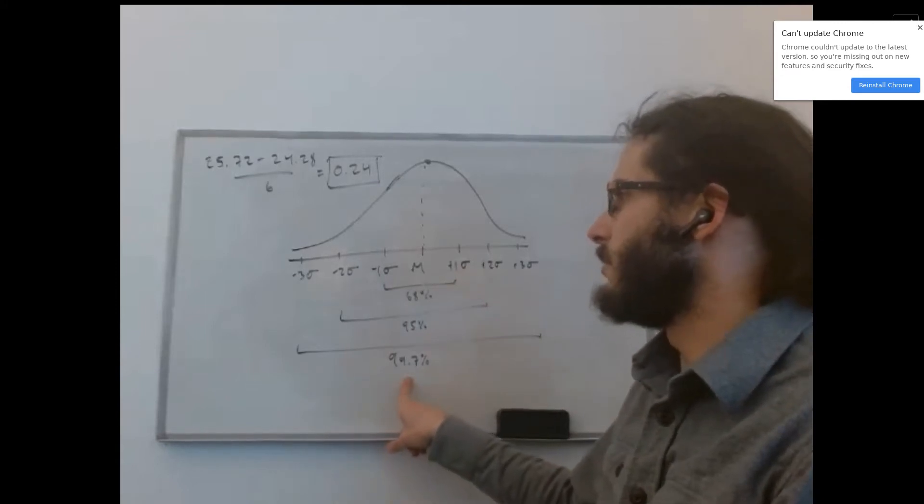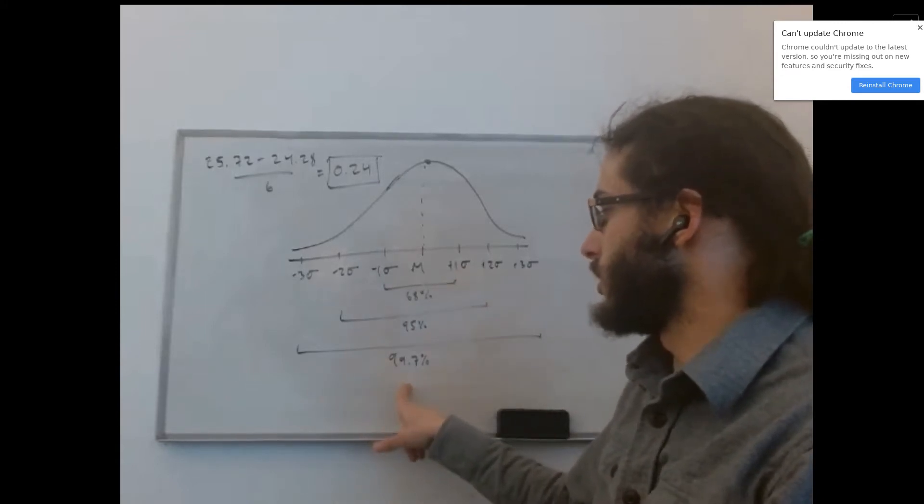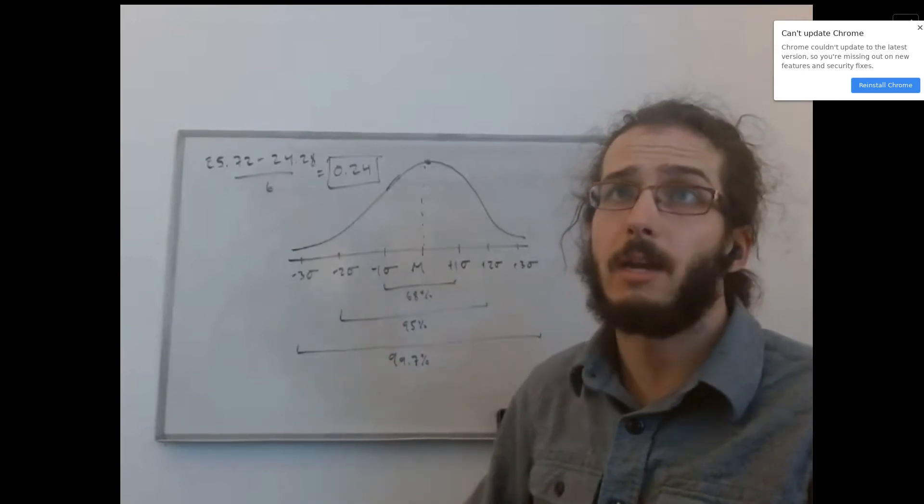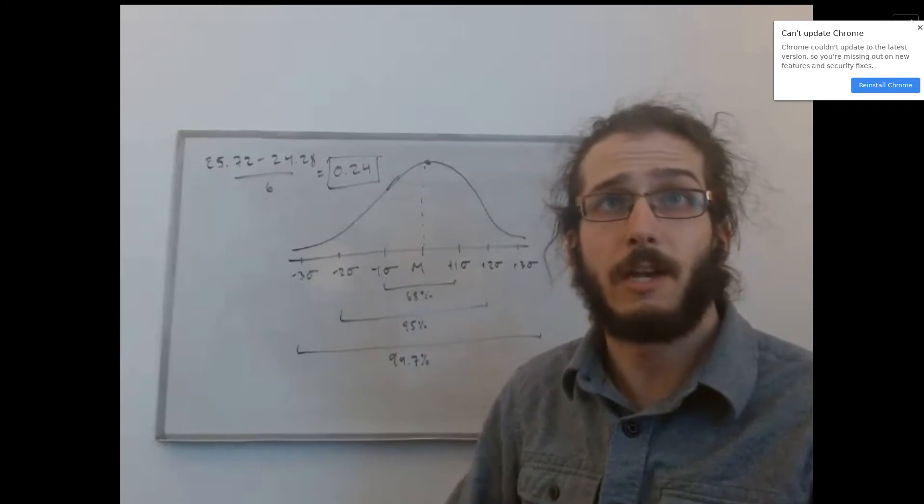And critically for this problem, three standard deviations above or below the mean is the range that we need to go out to to be sure we're going to include 99.7% of our data.